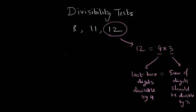Both these tests should be followed in order for a number to be divisible by 12. Let's take an example: 3,472.